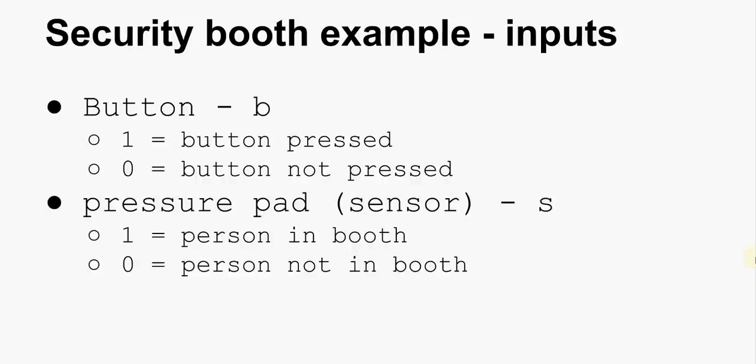Now, step one. Calculate or determine rather the inputs. Now, there are two inputs here. The button, and I've called that B. And the pressure pad, or the sensor, S. Both of them are positive logic. So, in other words, a one indicates the sensor is on and zero indicates the sensor is off. You might think it's obvious, but writing these things out helps both you at the design time and anyone else who would like to read your design later to make sure that they understand it.